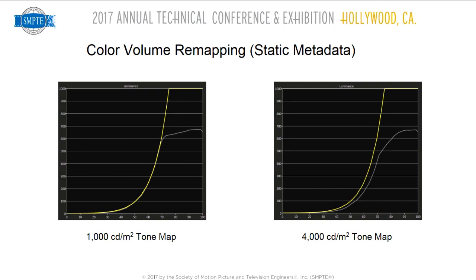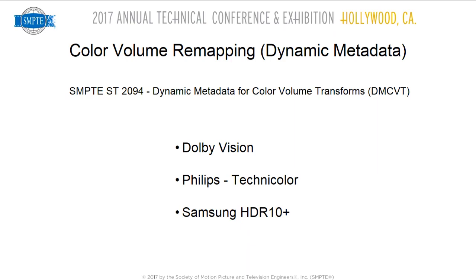There is no standard or even recommendation on how you're supposed to do this. On an actual display measured, sending metadata with test patterns of 1,000 nits versus 4,000 nits mastering display — the 4,000 nit content does not follow ST2084. The next approach is dynamic metadata — Dolby Vision, Philips Technicolor, or Samsung's HDR10+ — where the TV has frame-by-frame or scene-by-scene metadata describing how bright the scene is, the average, and the minimum. The TV doesn't need extra horsepower to calculate this; it just needs to look at the metadata and adjust its color volume transform.